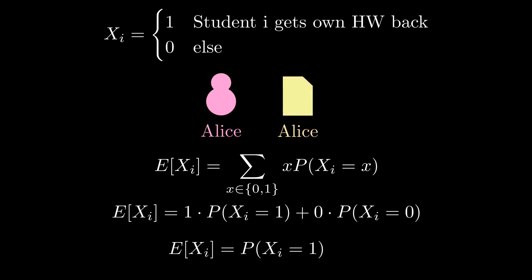Just looking at Alice, she gets someone's homework back. There's just as much chance of her getting her own as any other particular student's. Since she's one of n students, there's a 1 in n chance she gets her own homework back.